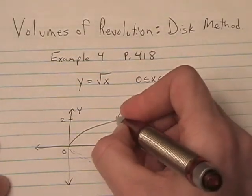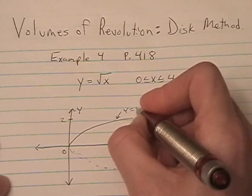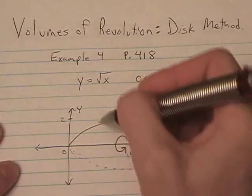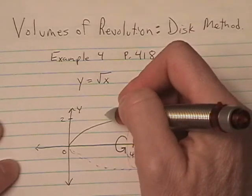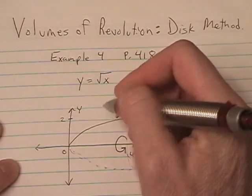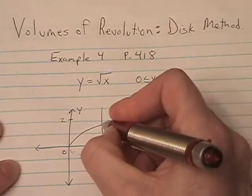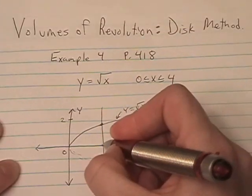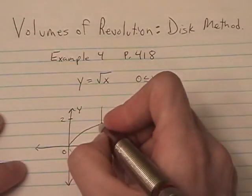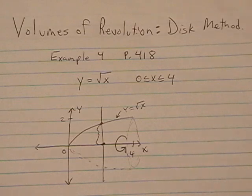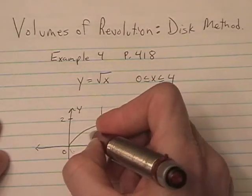It's also nice to label your function. Now, we always slice perpendicular to the axis of revolution — in this case perpendicular to the x-axis. This is just any old slice. And our radius is the distance from the axis of revolution out to the curve, which in this case is this distance.